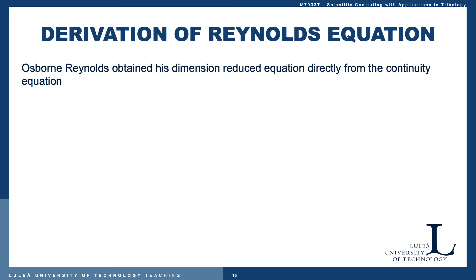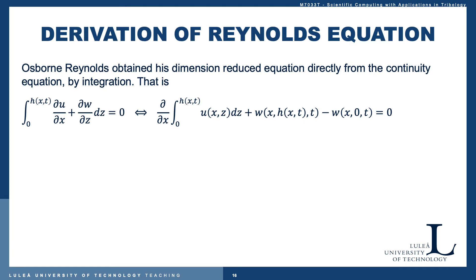We continue now with the derivation of the Reynolds equation. Osborne Reynolds originally obtained this dimension-reduced equation directly from the continuity equation by integration. By integrating the continuity equation from zero to the full clearance h(x,t) with respect to z, we can switch order between differentiation and integration and obtain the expression where we have integrated the second term as ∂w/∂z, which integrates to w by inserting the integration boundaries.